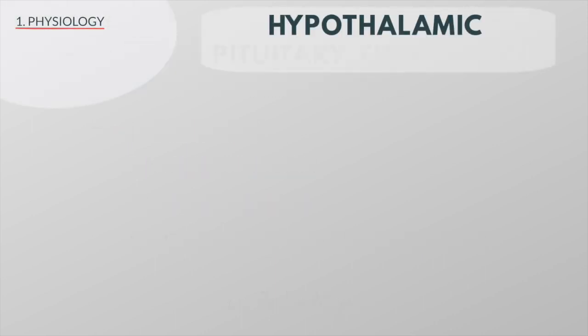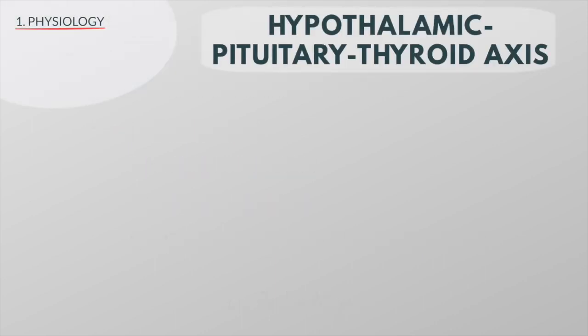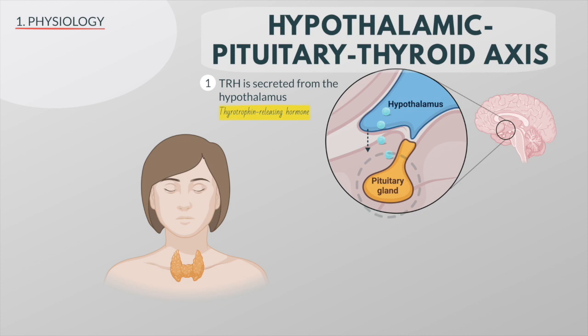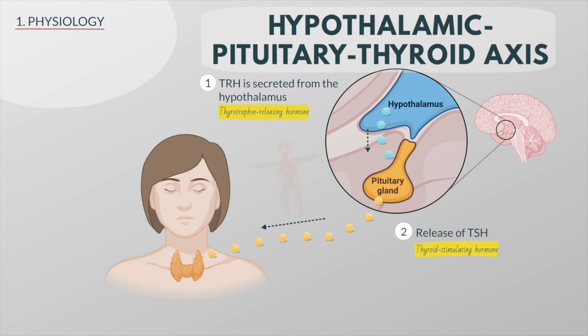Thyroid hormone release is controlled by the hypothalamic-pituitary-thyroid axis. Thyrotrophin-releasing hormone is secreted from the hypothalamus. It reaches the anterior pituitary and here it causes the release of thyroid-stimulating hormone. TSH is transported in the blood and acts upon the thyroid gland, promoting the release of thyroid hormone.